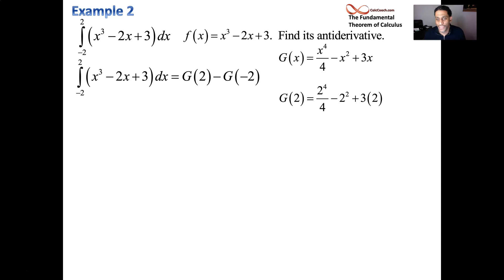So we plug a 2 into it and we get 16 over 4, which is 4 and then we subtract 4. Those cancel out and we get 6. We plug a negative 2 into it. The same action is going to happen. Negative 2 to the 4th is going to be 16 over 4, so it's 4. And the negative 2 squared is going to be 4 as well. We subtract them, they cancel. We get negative 6. And then we subtract 6 minus the negative 6. It gives us 12.